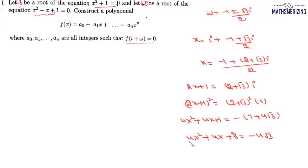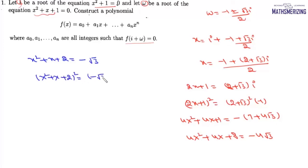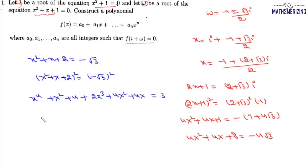Cancelling 4 from both sides, we get x² + x + 2 = -√3. Squaring both sides again: (x² + x + 2)² = 3, which expands to x⁴ + x² + 4 + 2x³ + 4x² + 4x = 3, giving x⁴ + 2x³ + 5x² + 4x = 3. Rearranging, we get x⁴ + 2x³ + 5x² + 4x + 1 = 0.